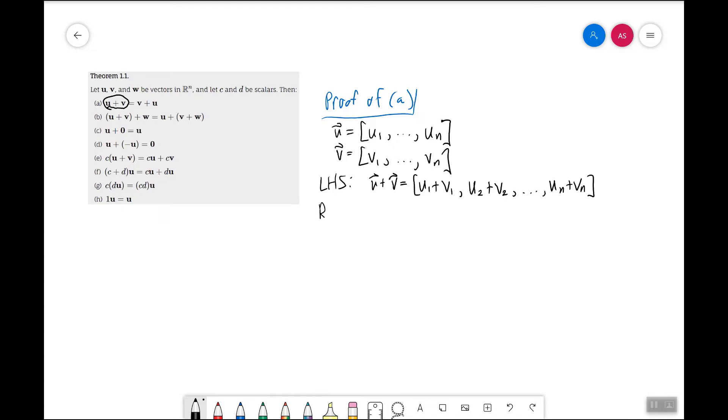On the other hand, the right-hand side, which is v plus u, is v1 plus u1, v2 plus u2, dot dot dot, vn plus un.